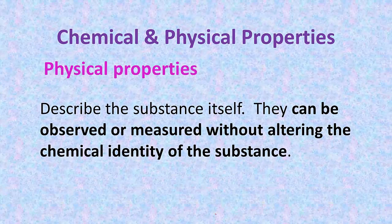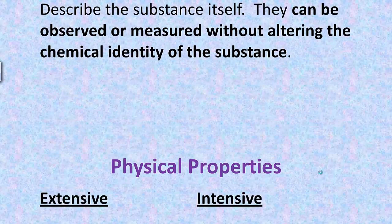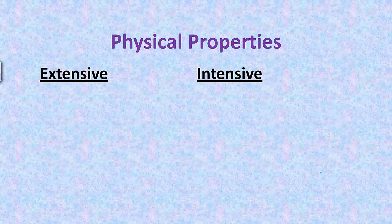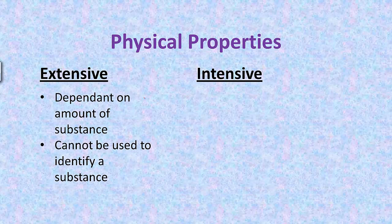Physical properties describe the substance. They can be observed or measured without altering the chemical identity of the substance. We have two types of physical properties: extensive physical properties and intensive physical properties. Extensive is dependent on the amount of substance. It's usually a number, and it cannot be used to identify a substance.